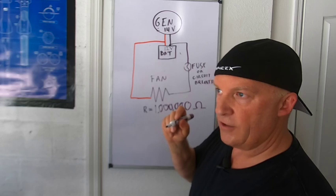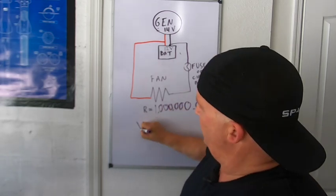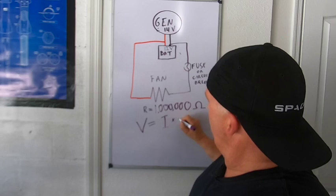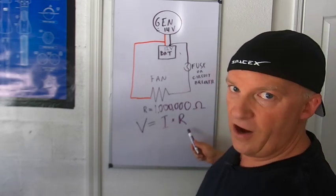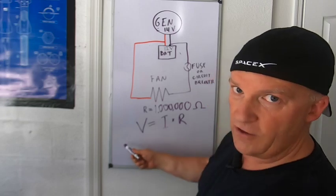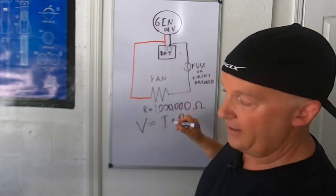A very important thing here is called Ohm's Law, which is the voltage equals the current times the resistance. Ohm's Law. V equals IR. That's the most important thing of this whole video. V equals IR. Remember that.